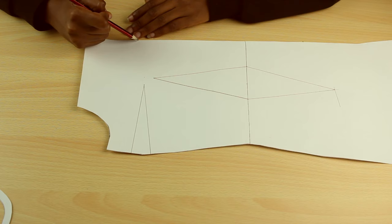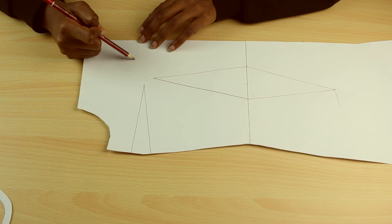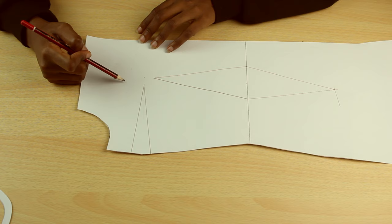To create the cowl neck, draw one or more lines from the center front to the armhole and to the top of the tube bodice. It's the slash and spread technique and the goal is to open up the pattern to create fullness where you want it.